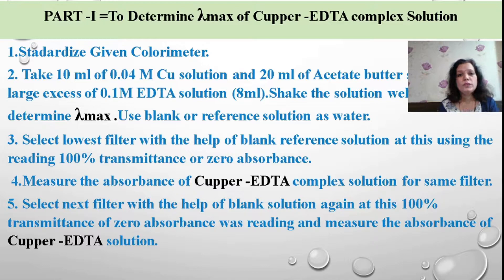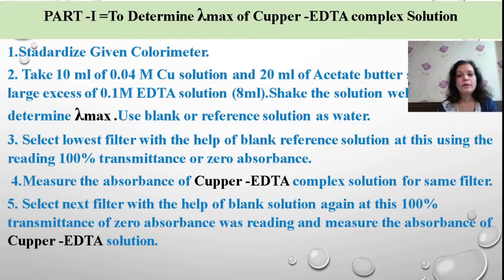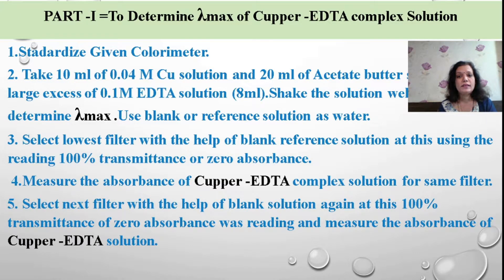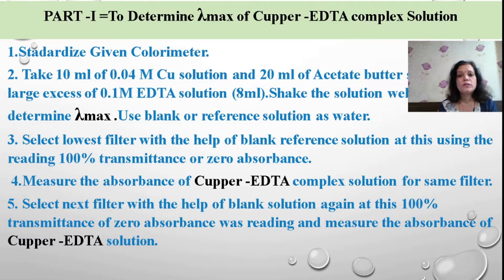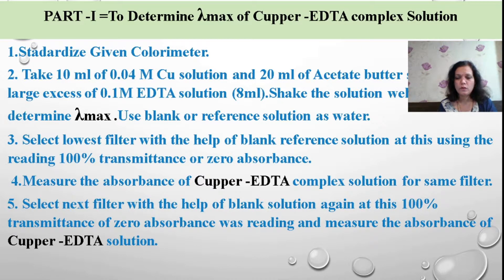To determine the concentration of copper present, we need to find out the maximum absorbing wavelength for the copper-EDTA complex. When copper reacts with EDTA, it forms a complex. EDTA — ethylene diamine tetra acetic acid — acts as a ligand, and copper is the metal. Once we know the maximum absorbing wavelength for this complex, we can determine the exact concentration of copper.